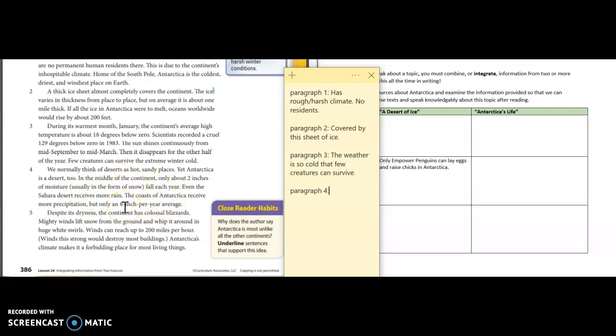And they're saying here that there's only about two inches of moisture that's falling each year, but it's usually snow. The coast of Antarctica received more precipitation but only an eight inch per year average. So paragraph four was mostly about it is actually a desert due to the lack of rain.